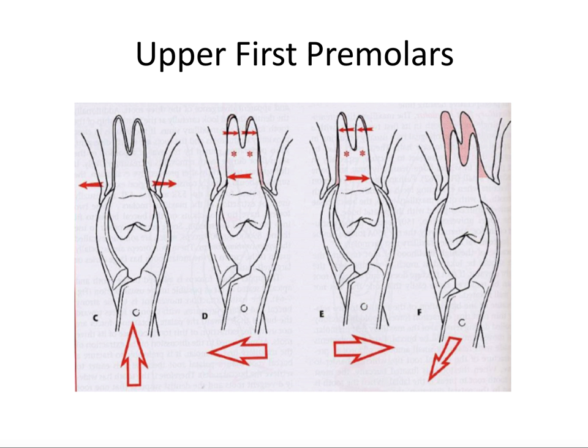For upper first premolars, we move the tooth buccally, hold for a few seconds, then lingual, then buccal, and so on. The difference here is that upper first premolars often have two roots that don't split until the apical third, making them very easy to crack off, especially if you apply rotational force. So as a general rule, we do not rotate any teeth that have more than one root. This is something we confirm with that periapical radiograph taken prior to the extraction — so you know going in that you're only going to use buccal and lingual force.